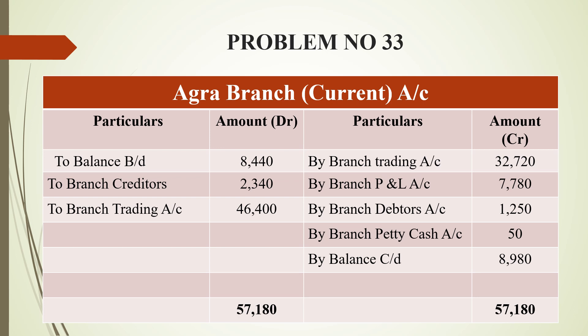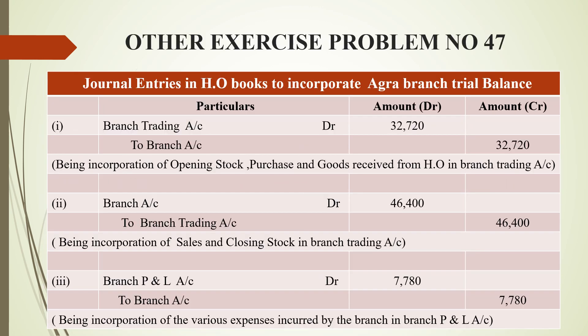Now for the journal entries. The first entry incorporates all trading expenses: branch trading account is debited because the amount is going out for the purpose of trading, and branch account is credited since cash goes out of the branch. The total for opening stock, purchases, and goods received from head office is 32,720 rupees. Narration: being incorporation of opening stock, purchases, and goods received from head office in branch trading account.